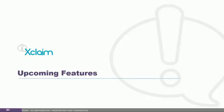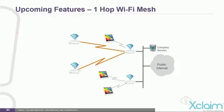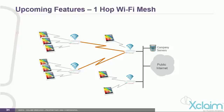Next, we'll cover some of Xclaim's upcoming features. One-hop Wi-Fi mesh will allow you to do a single-hop mesh available only on the 5 GHz radios. The first, or root AP, has its LAN port connected to the network via a hard wire and is wirelessly connected to another AP using mesh, which in turn has clients attached to it. By using mesh, you can extend the range of your Wi-Fi network.